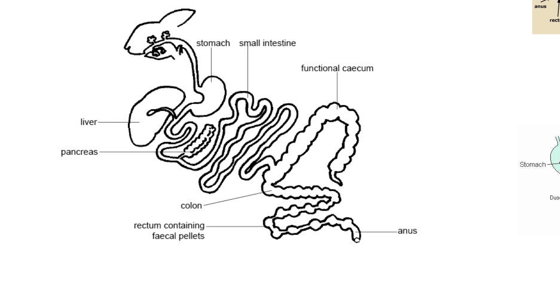They've got the pancreas up here and having a duct to the small intestine. They've labeled this tube small intestine. Then they say functional cecum because the cecum of a rabbit is very active because a rabbit is a hindgut fermenter. They eat a lot of roughage.